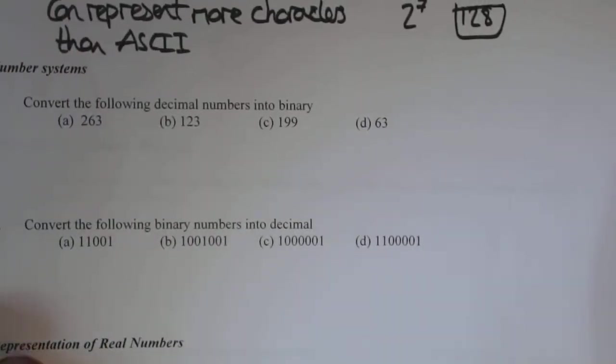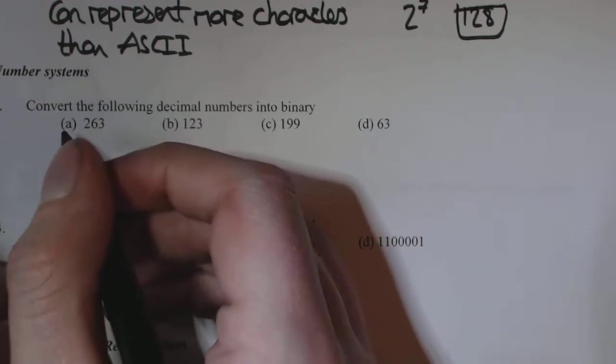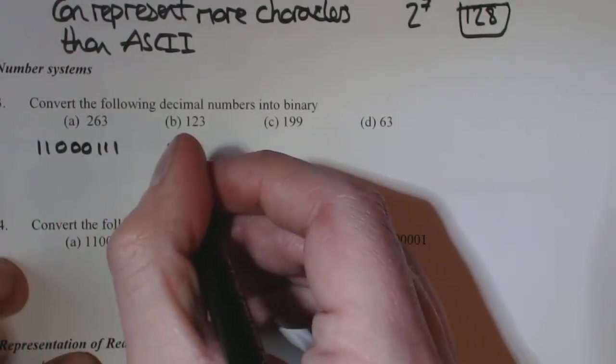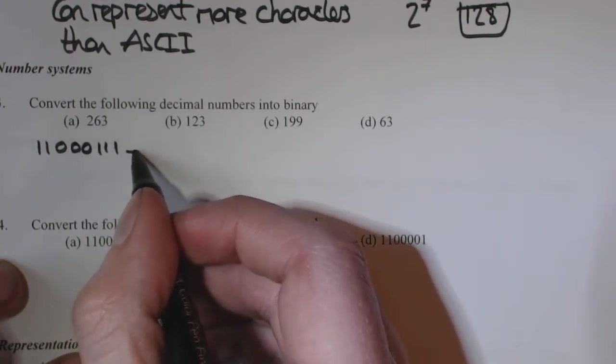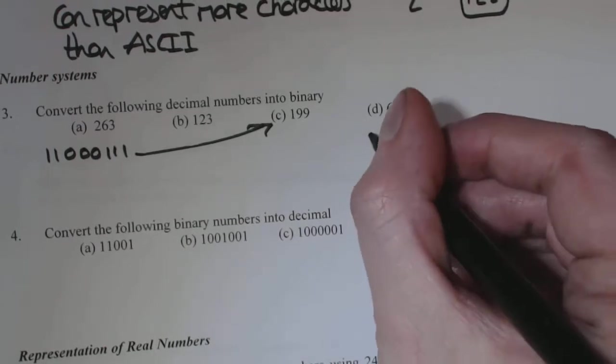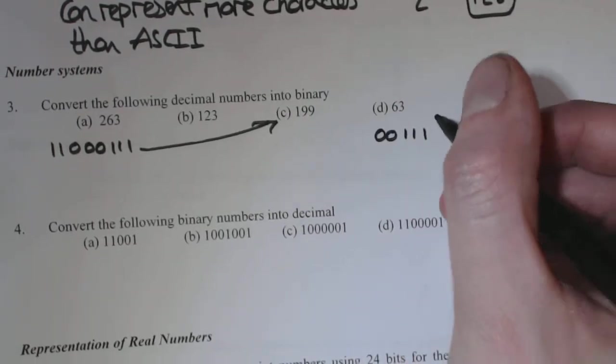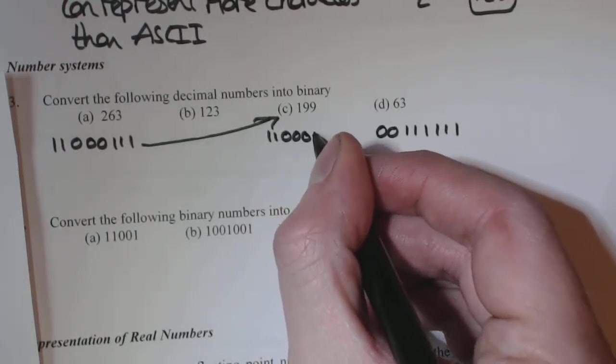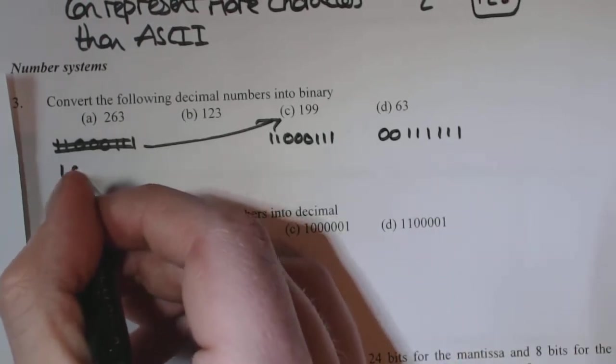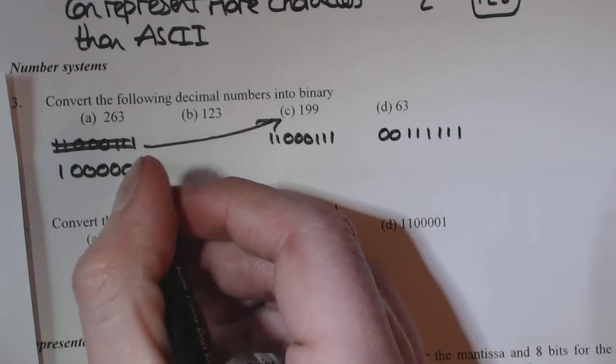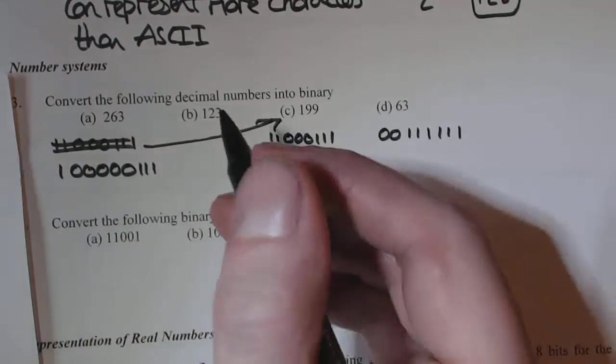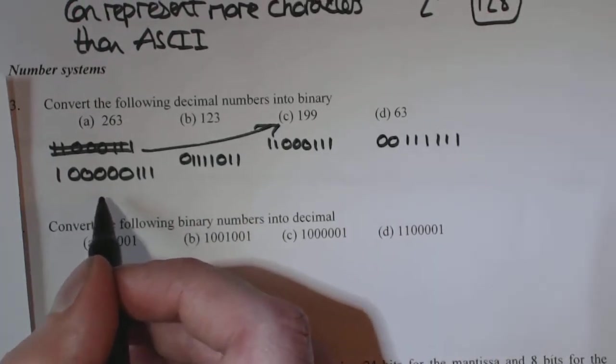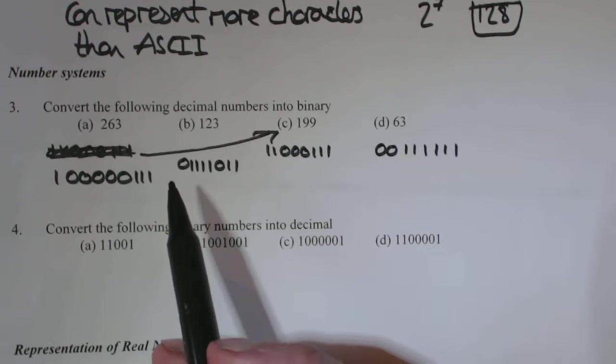So it might be just worthwhile putting the answers down. So that's 11000111. That's 63. That's 00111111. So I'll just put this. 263, that was your 9 bit 1. 111, that's 150's, 111. And 123, 01111011. I made a wee mistake there. Alright, so that's your answers.